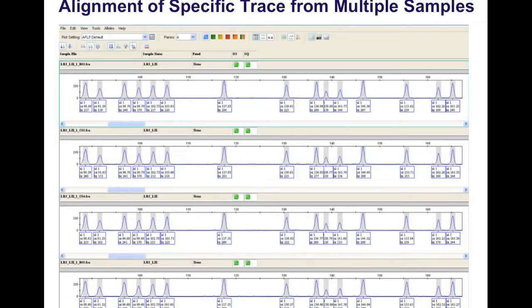A unique feature in GeneMapper is that you can align all these traces from multiple samples. That is something you cannot do in sequence analysis software, and that is a very powerful feature in GeneMapper. You can align multiple samples and focus, for example, on the G traces. You can immediately see any differences, if there are any, from sample to sample.